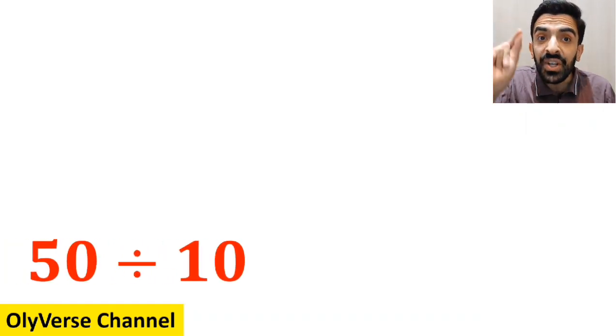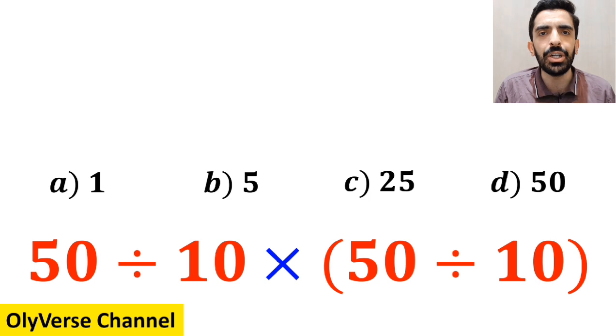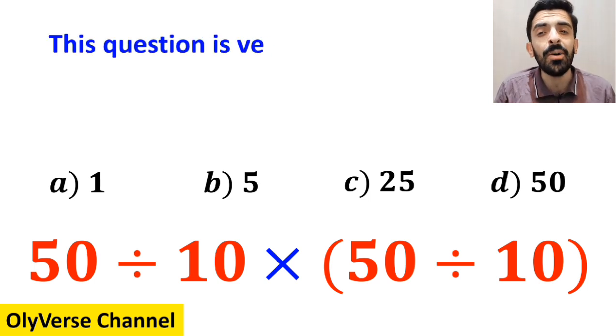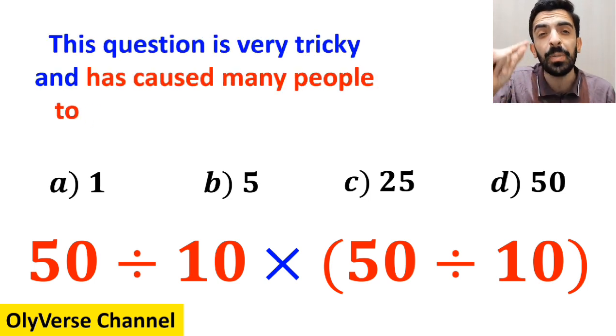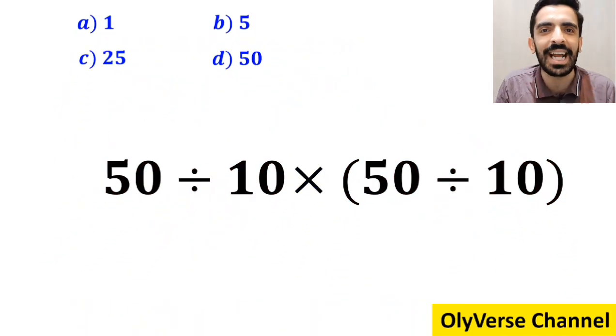What is the value of the expression 50 divided by 10, then multiply by (50 divided by 10)? Which option do you think is the correct answer to this question? This expression is very tricky and has caused many people to pick the wrong option. Let's take a closer look and solve it together.